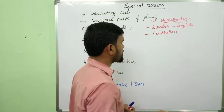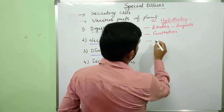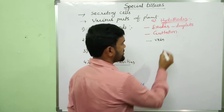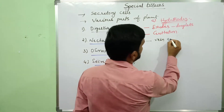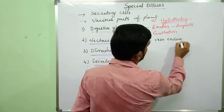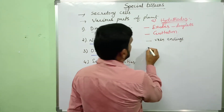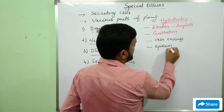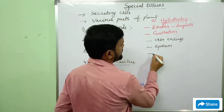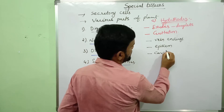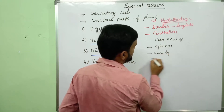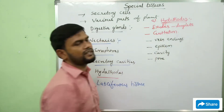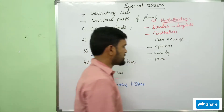Each hydathode contains vein endings. A hydathode consists of vein endings, epithem, a cavity, and a pore. All these parts are present in a hydathode.